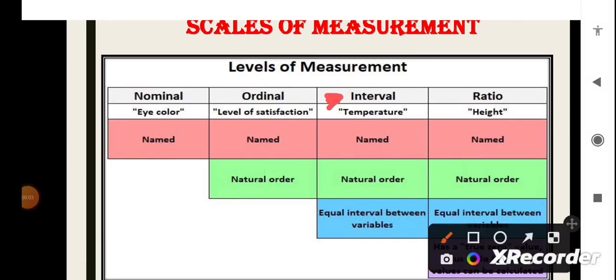Third one is the interval, in which both order, name and exact difference between the variables is known. But, they don't have true zero. Last one is the ratio, which is the best scale and it is the correct scale because it has the property of nominal, ordinal, interval and it also has the true zero.